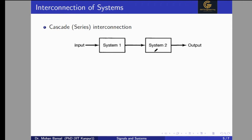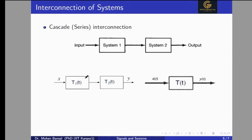System 1 and System 2 are connected in series — both are in cascade. We are giving the input signal to System 1, and the output of System 1 is given to System 2, and we get the final output. This is the series connection. Let's say the system function of System 1 is T1(T) and System 2 is T2(T). What will be the total T(T)?